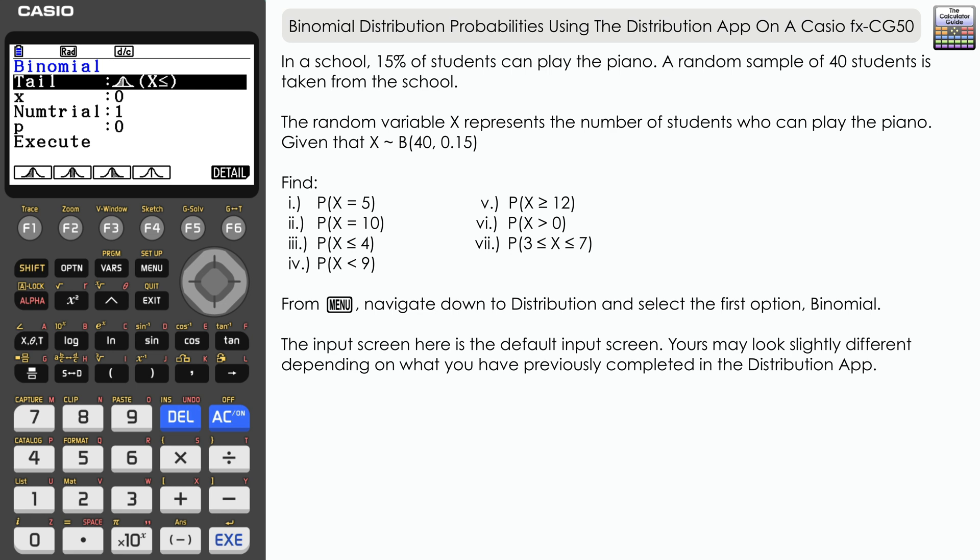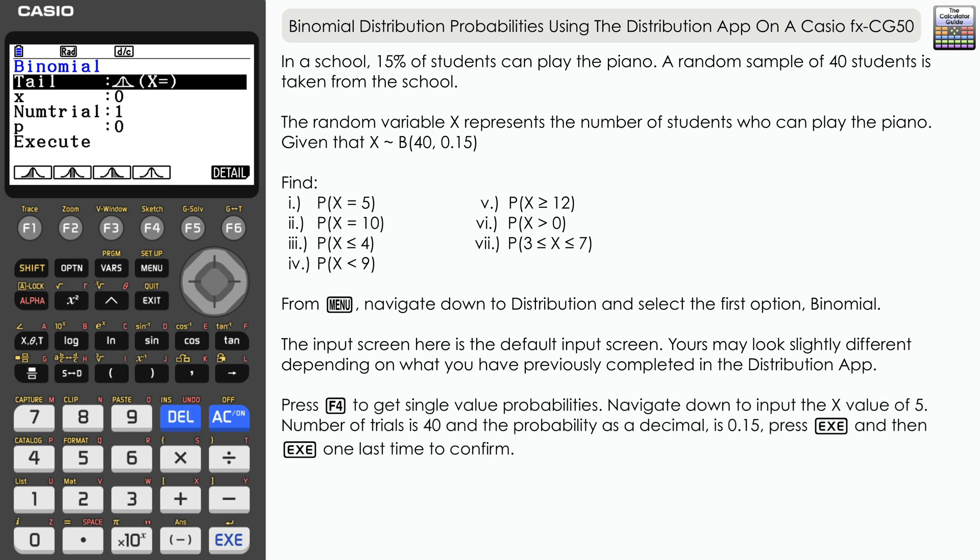If we take a look at the first probability, we need to find the probability that X equals 5. That is, what is the probability that five of the students in our sample of 40 can play the piano? So at this point we just need to press F4 to get a single value. You can see it's X equals. Navigate down.